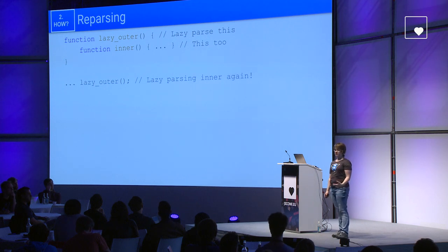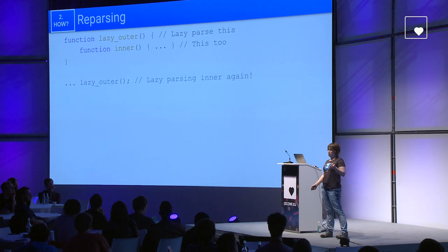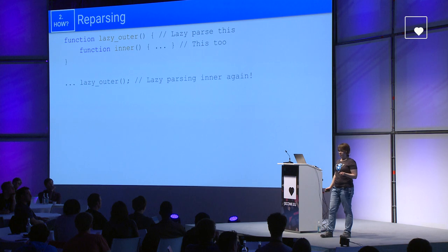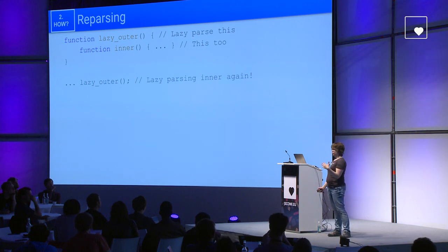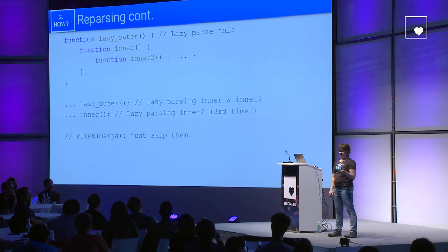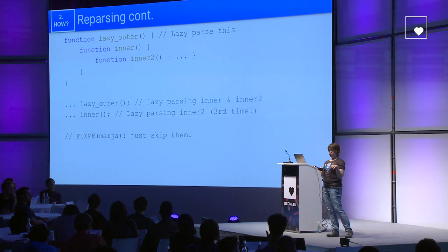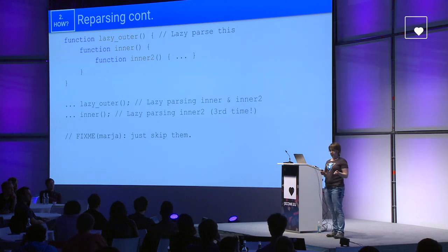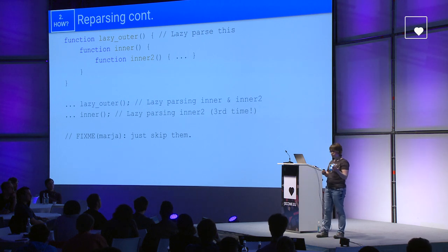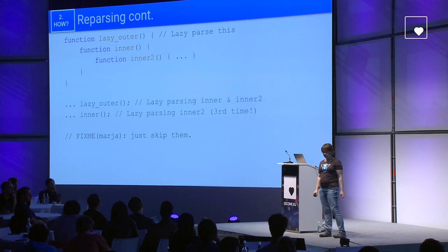In some situations, V8 also has to re-parse code it has already lazy parsed. For example, with a lazy outer function, we lazy parse everything inside it including inner functions. When we call the lazy outer function, we need to pre-parse or lazy parse inner again, even though we already did it once. And it gets even worse with more nesting — inner functions get lazy parsed three times in total. Obviously this is quite bad and not how it should work. This is something I'm personally working on — instead of lazy parsing again, we should just skip those functions if we've already lazy parsed them once.